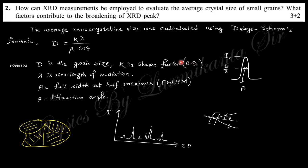Lambda is the wavelength of the X-ray used in the experiment. Beta is the full width at half maximum (FWHM). If you take any peak, this corresponds to these planes.